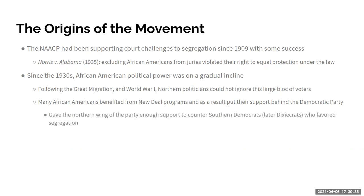During the 1930s under FDR, many African Americans benefited from New Deal programs and as a result began to support the Democratic Party. They voted for FDR overwhelmingly every time he was re-elected and were a major influence in carrying him to victory. This massive political influence gave the northern wing of the Democratic Party — those inclined toward civil rights and anti-Jim Crow positions — enough support to counter the Southern Democrats, the Dixiecrats, who favored segregation.